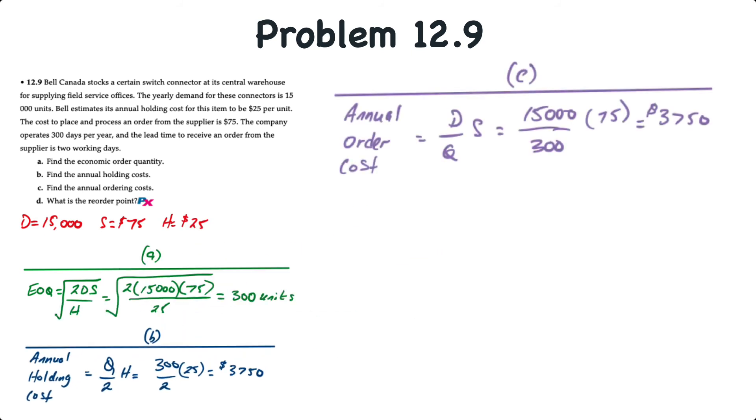The formula for annual order cost is equal to demand divided by quantity, or EOQ, times the order cost, S. That's 15,000 units per year, divided by 300 units times $75, and that's $3,750.